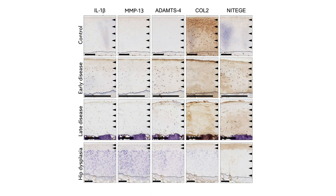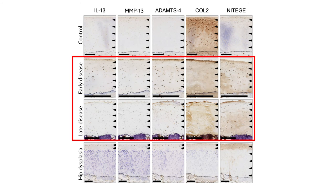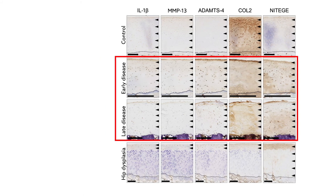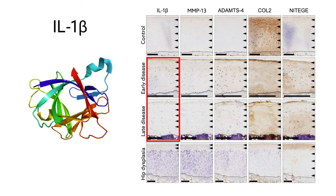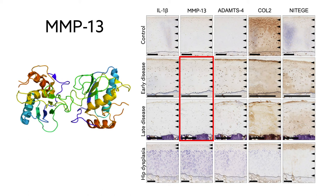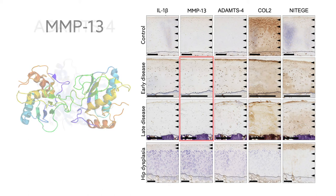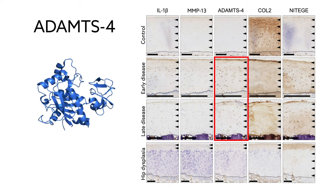To find out, the team examined the expression of inflammatory molecules in the different samples. The two groups of hips showing signs of impingement exhibited unique patterns of inflammation. Compared with hips with dysplasia and control hips, they expressed higher concentrations of inflammatory and degradative proteins, such as interleukin-1-beta, a cytokine involved in osteoarthritis; matrix metalloproteinase-13, an enzyme linked to tissue remodeling; and ADAMTS-4, an enzyme associated with cartilage degradation in osteoarthritis.